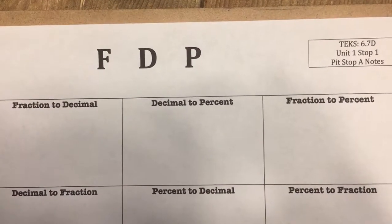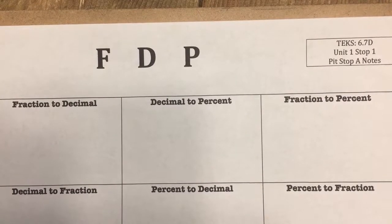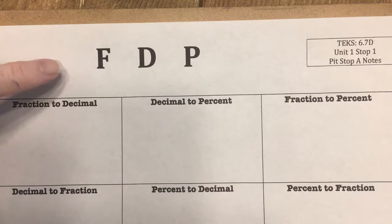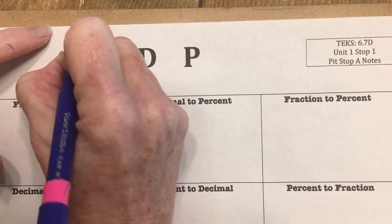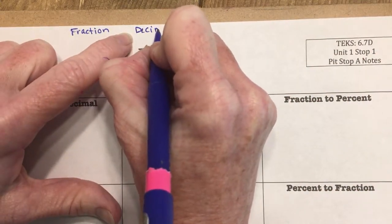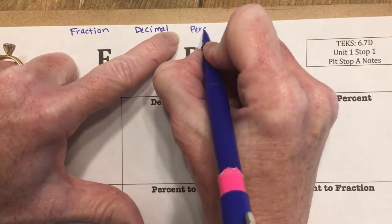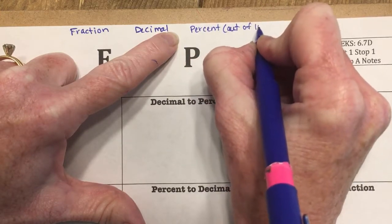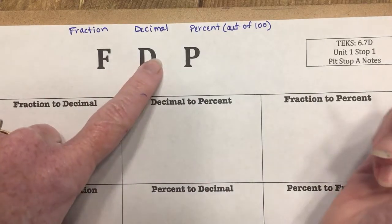Today we're going to be talking about FDP — it's just a tool we use to remember how to change fractions, decimals, and percents. You should already know there's a relationship between them; they're all just different ways of representing the same ratio. The F stands for fraction, the D for decimal, and the P for percent. As a reminder, percent means out of 100.